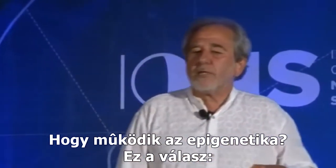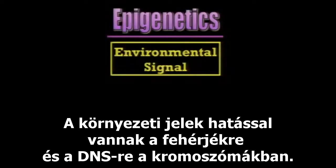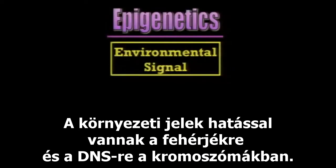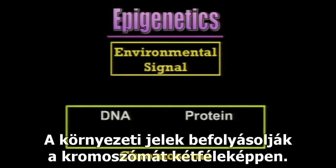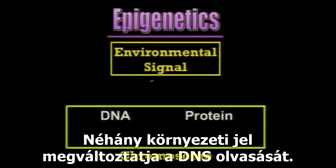How does epigenetics work? Environmental signals influence the proteins and the DNA in the chromosomes. So environmental signals affect the chromosome in two ways. Some environmental signals actually alter the reading of the DNA.